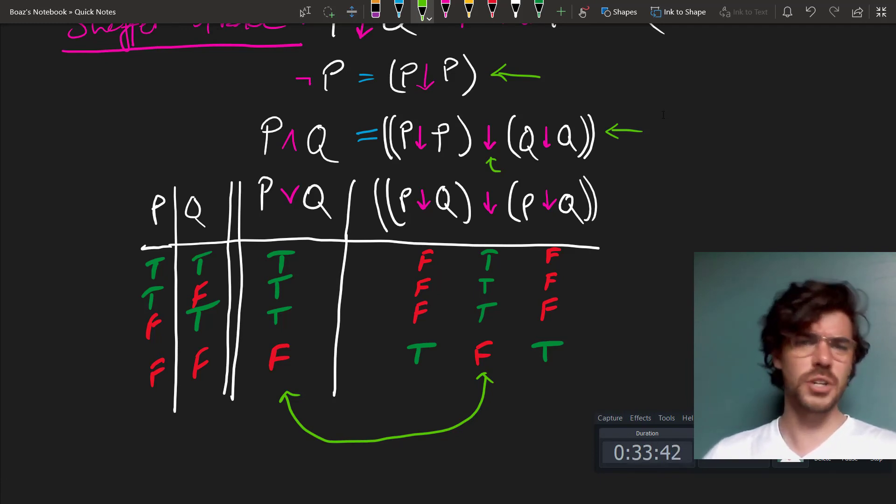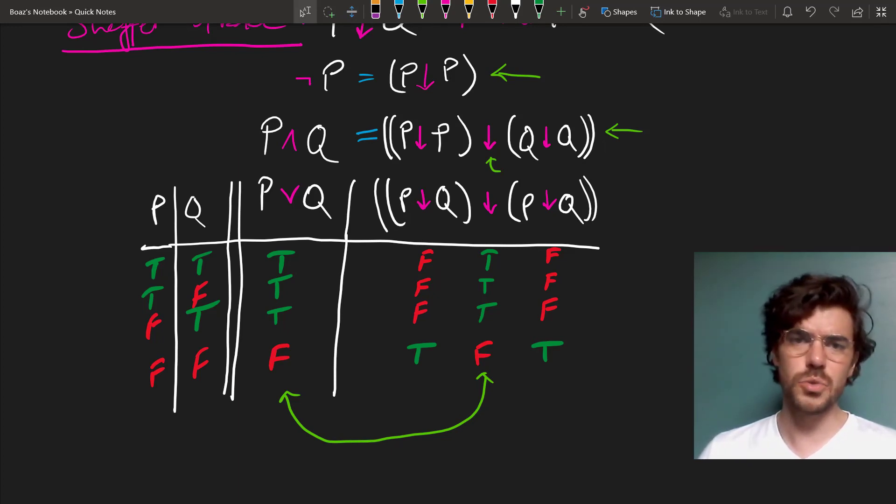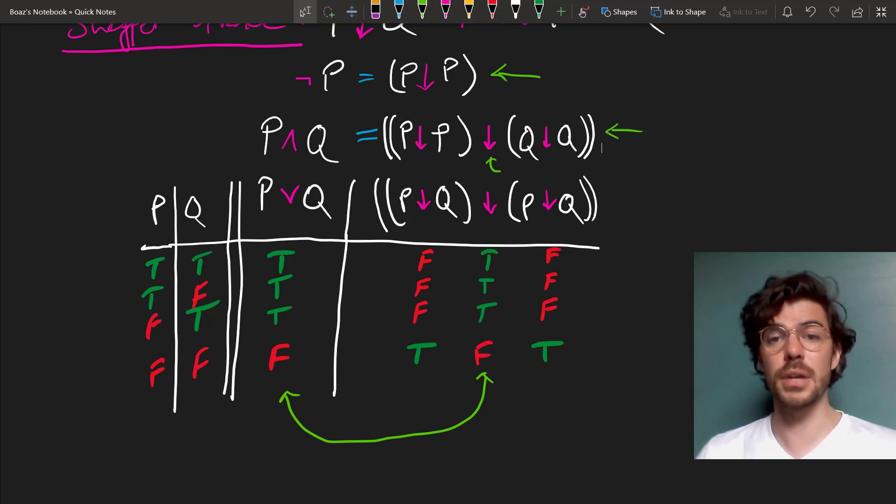given that the Boolean operators are truth functionally complete, how many do you need? And the fact of the matter is there isn't really one answer to this at all. It would be needlessly laborious to use just the Sheffer stroke for all the things we're going to be doing in this course. But on the other hand, it would be way too complicated